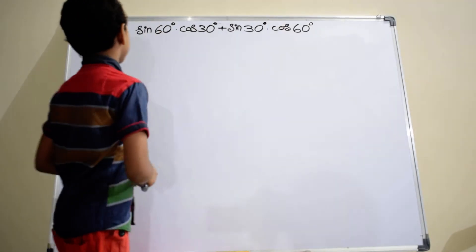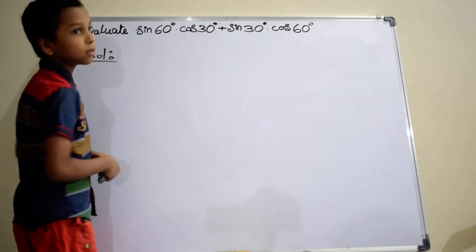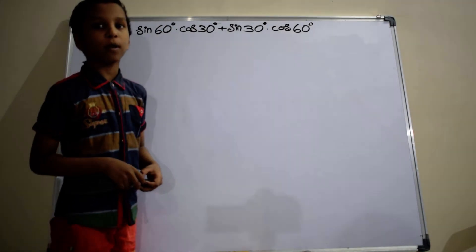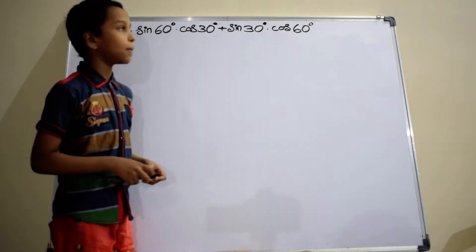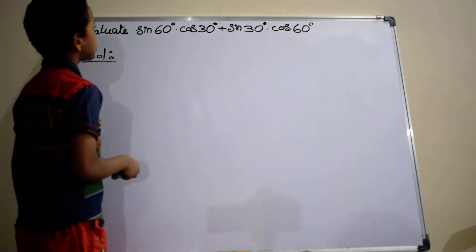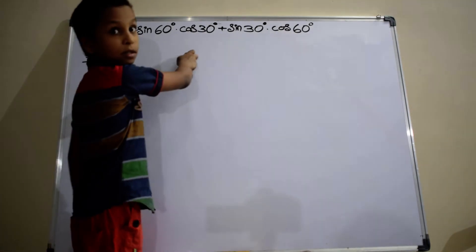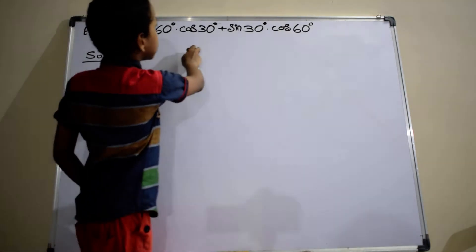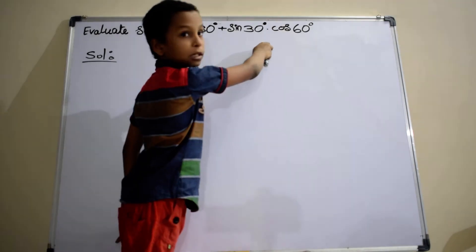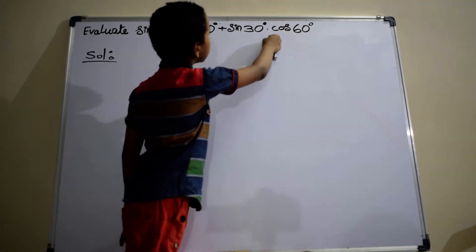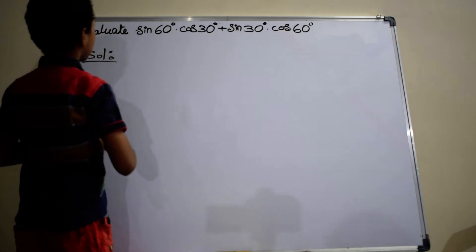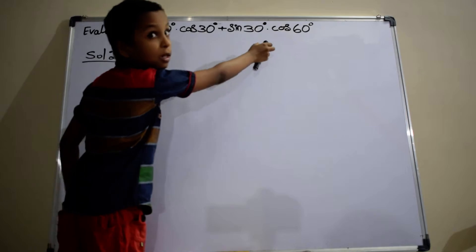Hi, I am Seth and Dr. Salas. We discuss the solution of the given problem. The problem is: evaluate sin 60 degrees into cos 30 degrees plus sin 30 degrees into cos 60 degrees.